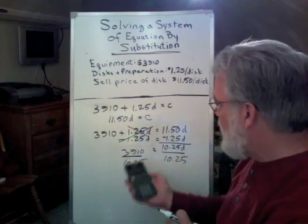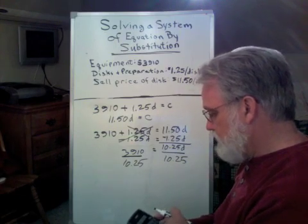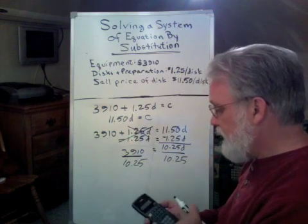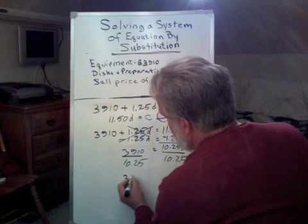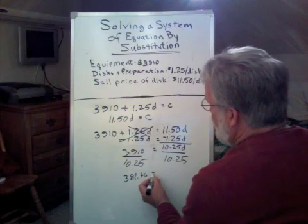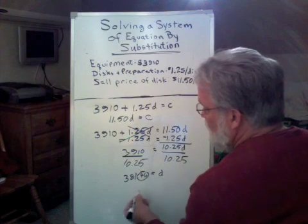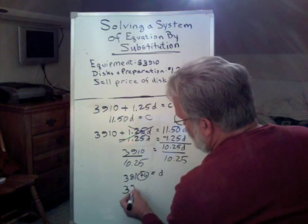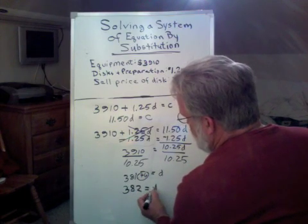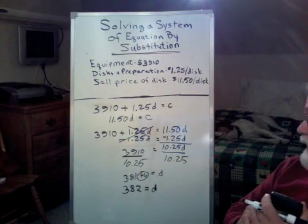So what have I got? I'm going to have 3,910 divided by 10.25 and that will equal 381.46. Well, I can't sell a .46 disc so I must round this up even though it looks like a round down. So I must sell at least 382 discs to recover my costs of producing those 382 discs.